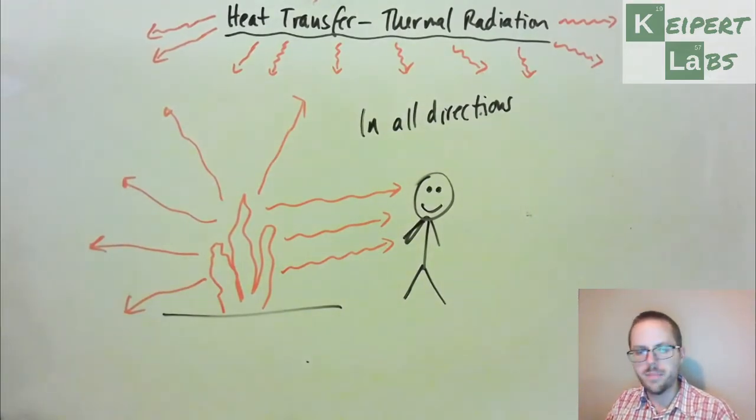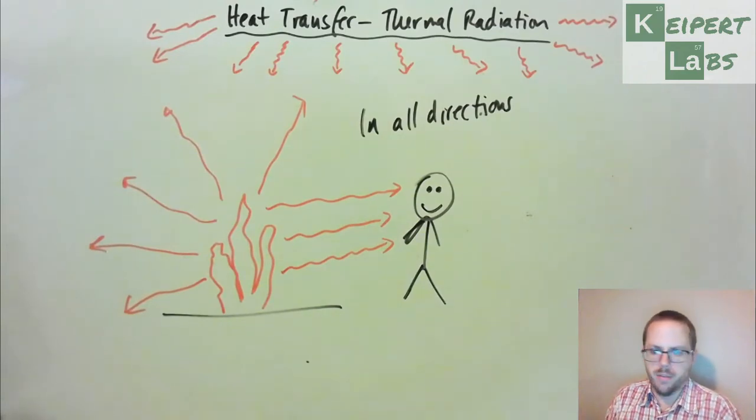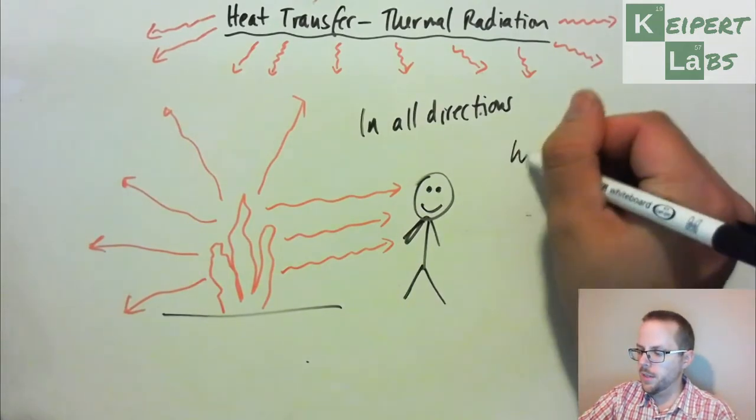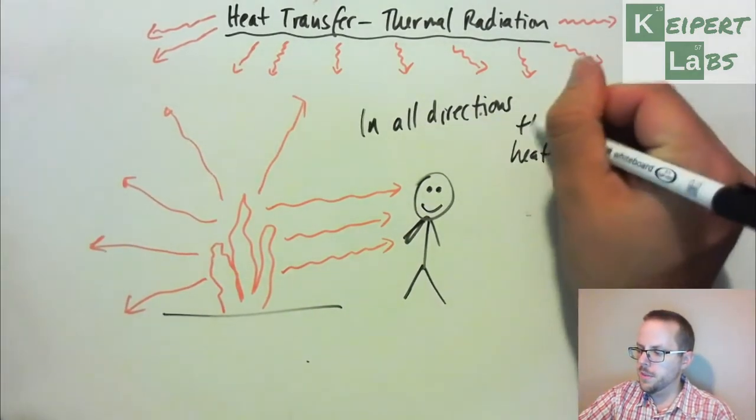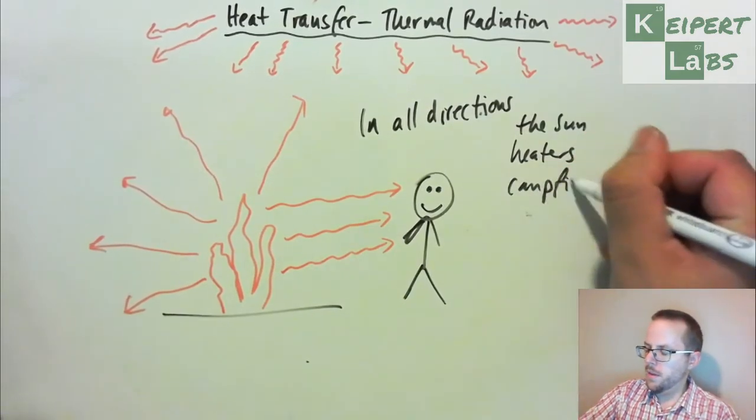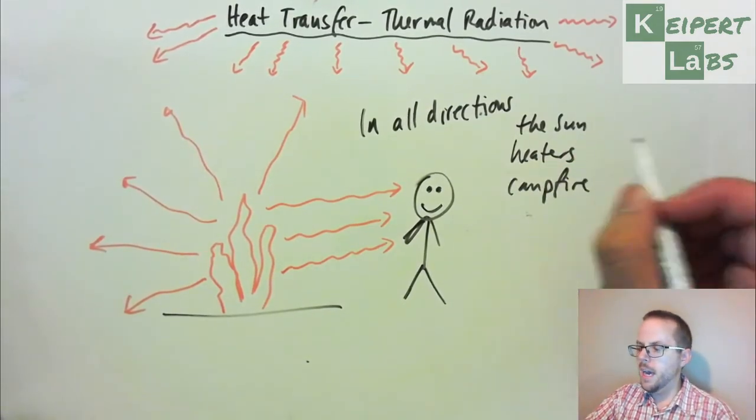So like I said, it comes from the sun, which is a very, very hot object. It comes from things like campfires, it comes from a heater that you might use, like a bar heater that you might plug in to keep you warm in winter. And it also happens in situations like heaters, the sun, campfire, melting your marshmallows.